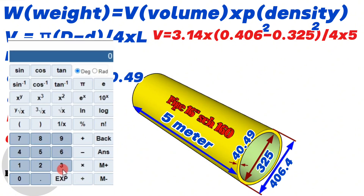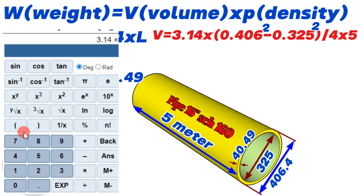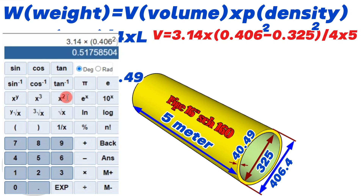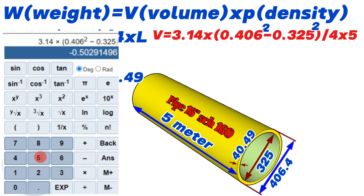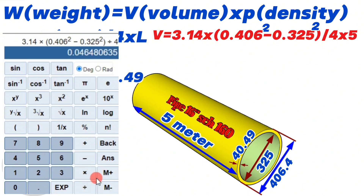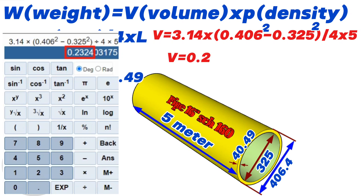Using the calculator, we find that 3.14 × (0.406² − 0.325²) ÷ 4 × 5 equals 0.2324. So we calculated and found that the volume of the 16 inch pipe in our example is 0.2324 cubic meters.